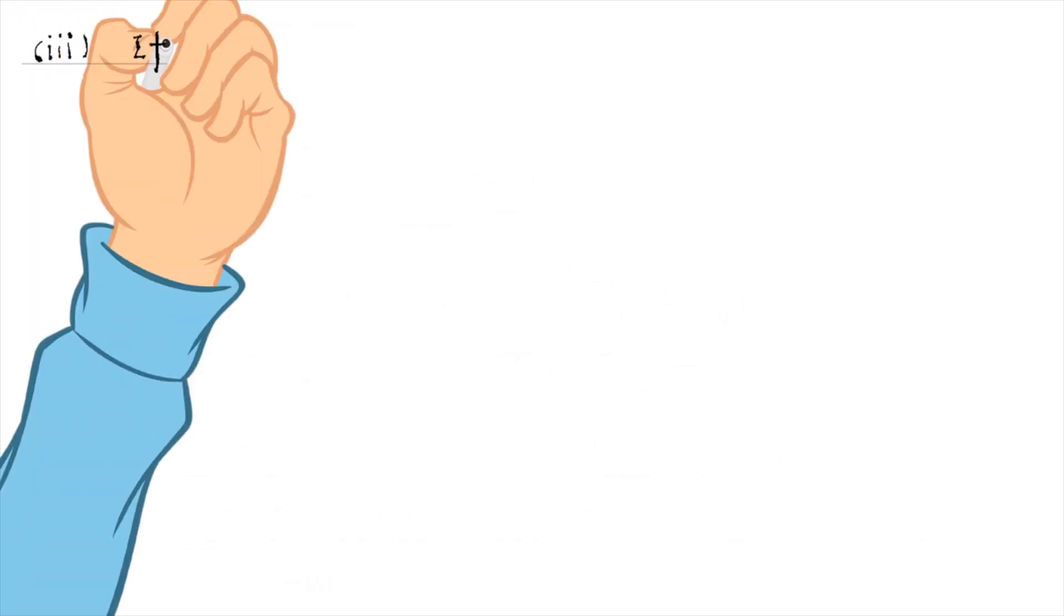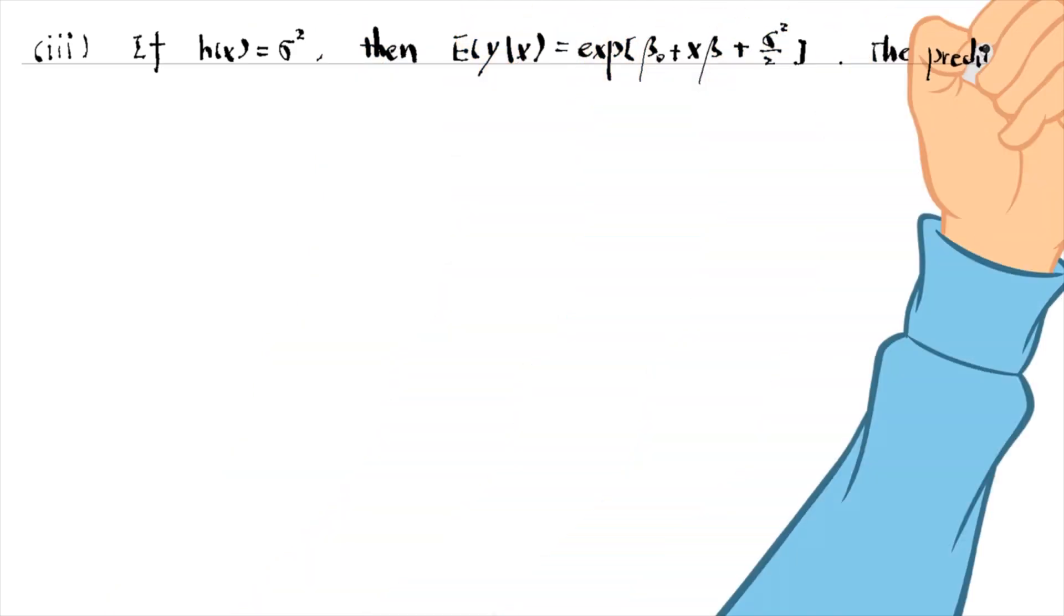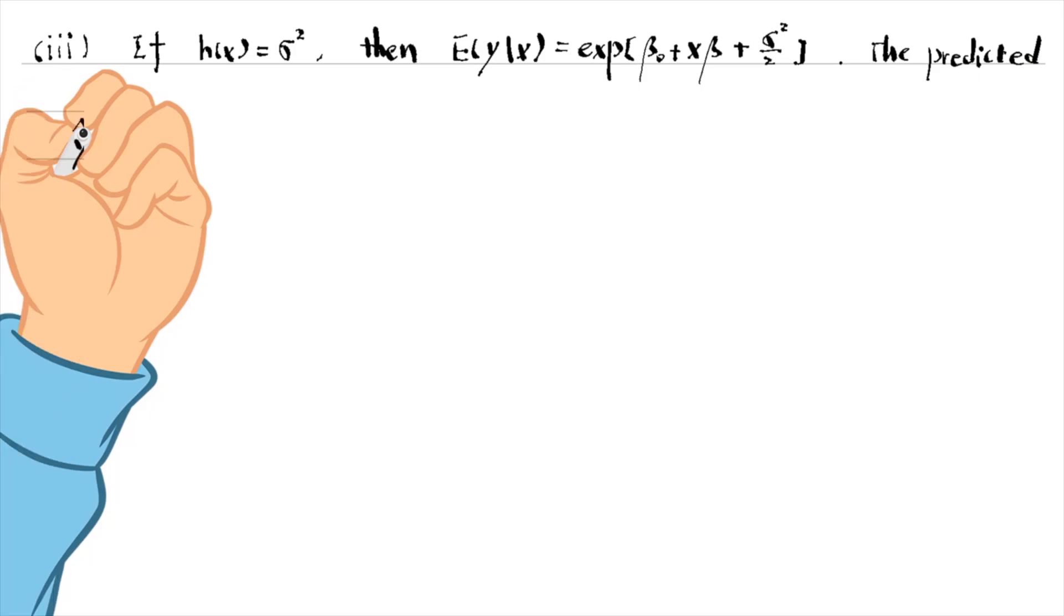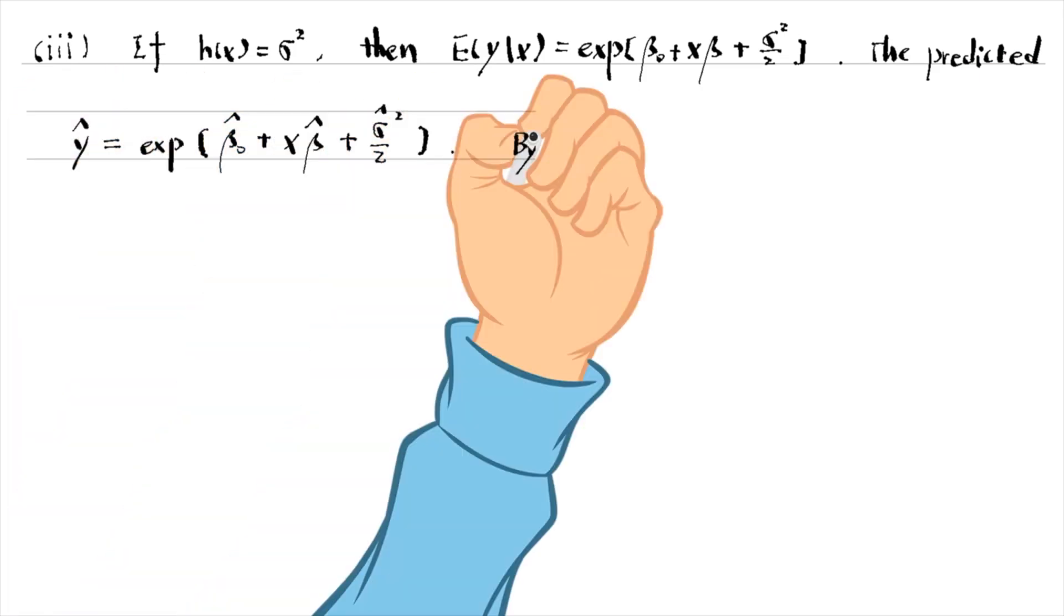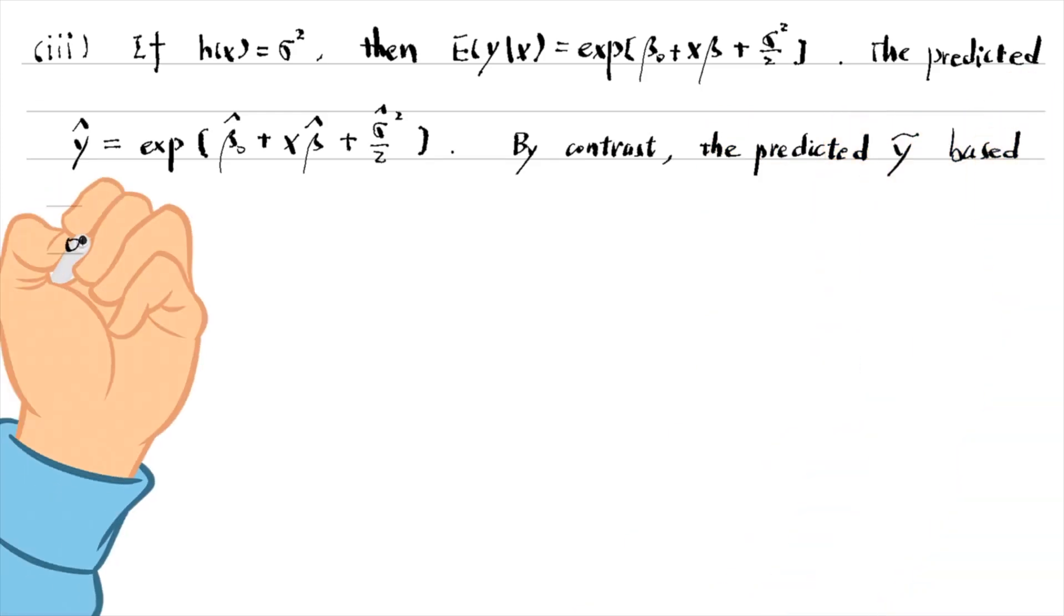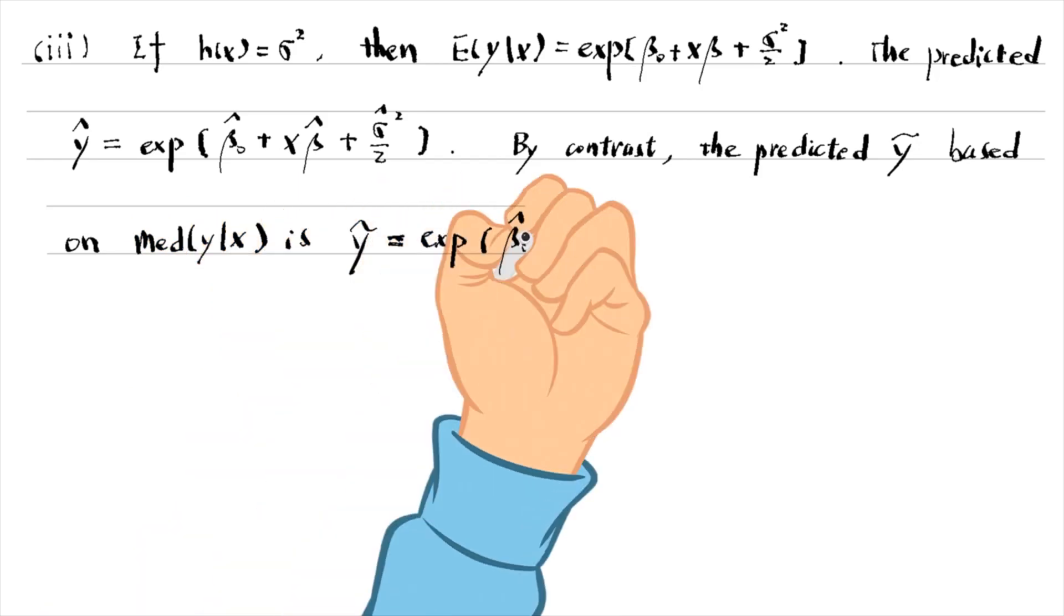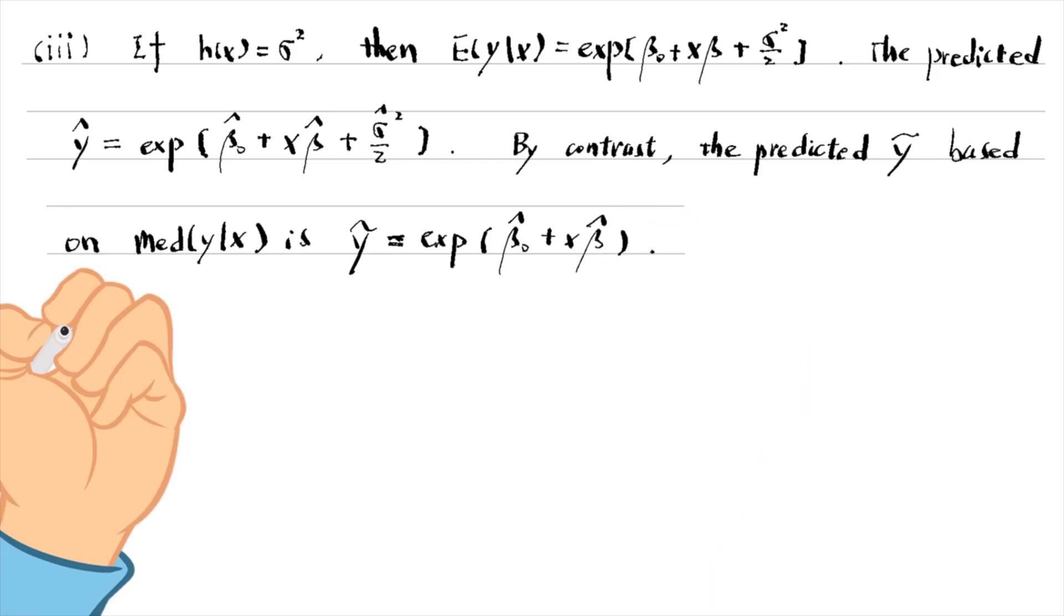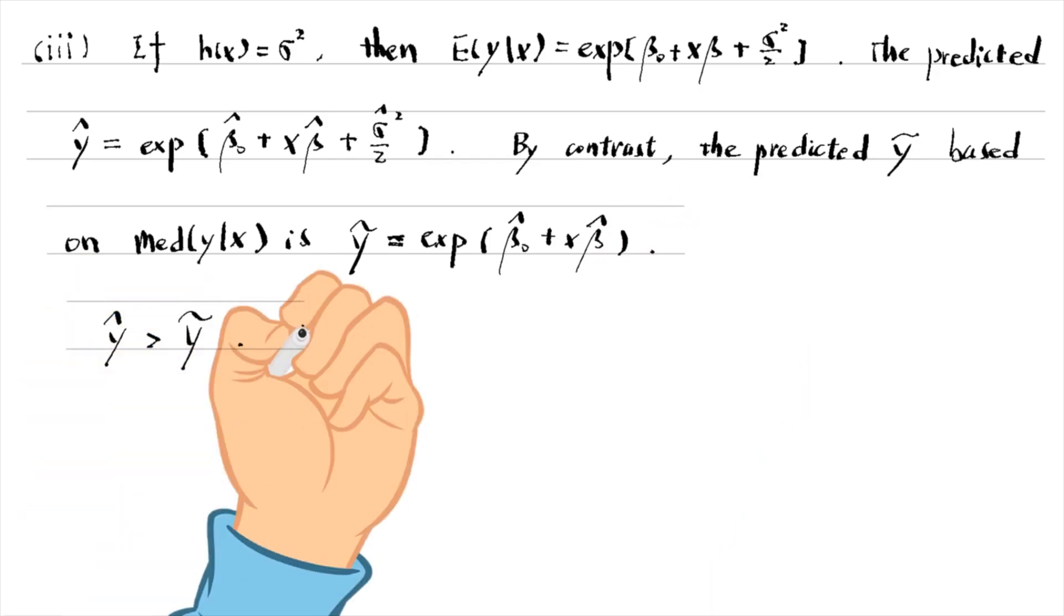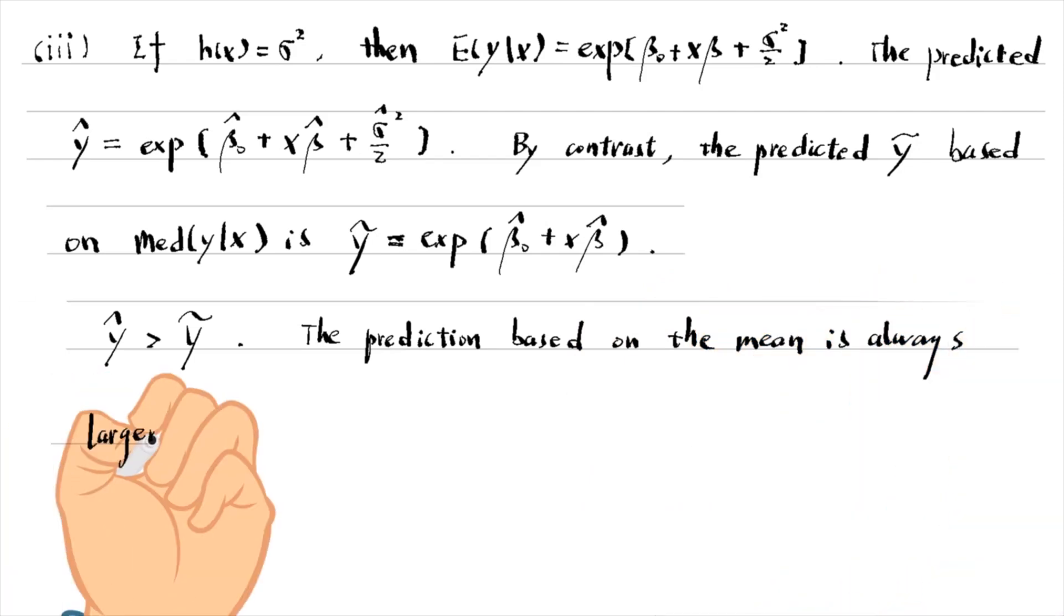For part 3, if h equals sigma squared, we can write the predicted y based on the mean and that based on the median. Y hat is always larger than y tilde. In other words, the prediction based on the mean is always larger than that based on the median.